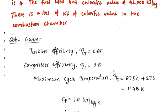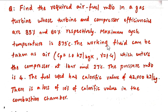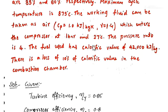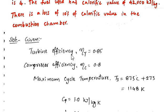Looking at the given data, the efficiency of the turbine and compressor are given. Turbine efficiency is 85% and compressor efficiency is 80%. These are nothing but the isentropic efficiencies of the turbine and compressor. So turbine efficiency eta_T = 0.85 and compressor efficiency eta_C = 0.8.